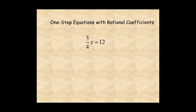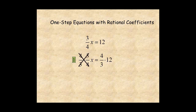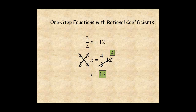For this example, begin by multiplying both sides of the equation by 4 over 3 — the inverse of the coefficient 3 over 4. On the left, 4 over 3 times 3 over 4 equals 1, and you get 1 times x, which is just x. On the right, you can cross-cancel: 12 divided by 3 equals 4, and 4 times 4 equals 16. The solution is x equals 16. Be sure to check the solution.